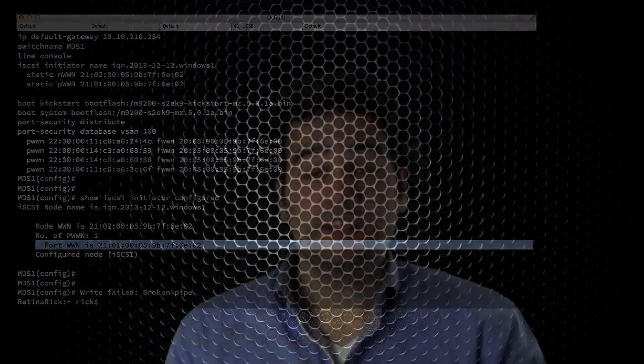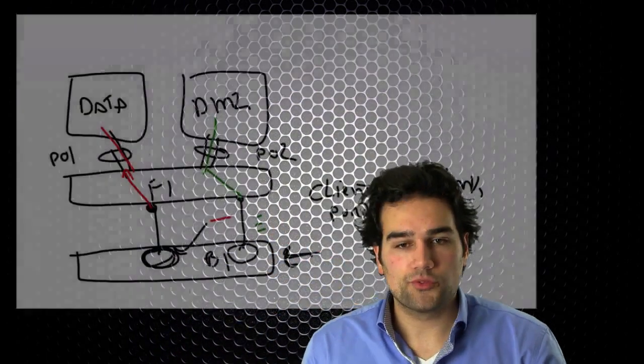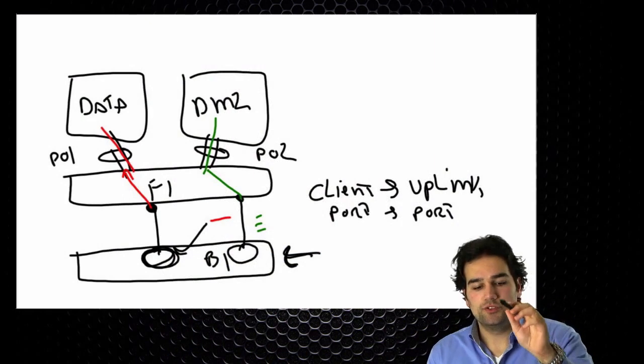What that means is we're talking about the fabric interconnect with its LAN uplinks, port channels and disjoint layer 2. We talked about the fabric extenders from the fabric interconnect going down to the UCS, and what I want to focus on now is the connection from the fabric extender to the blade.